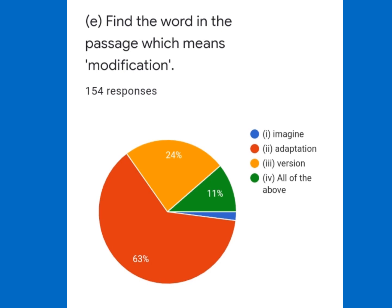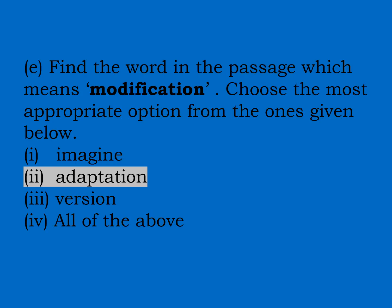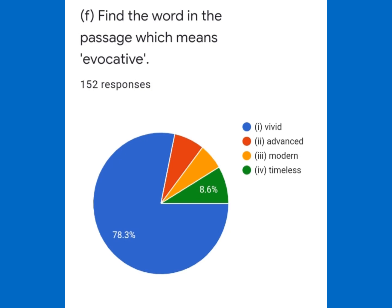This is Question 2, E part. Find the word in the passage which means 'modification.' The correct answer is option 2: adaptation. This is Question 2, F part. Find the word in the passage which means 'evocative.' The correct answer is option 1: vivid.